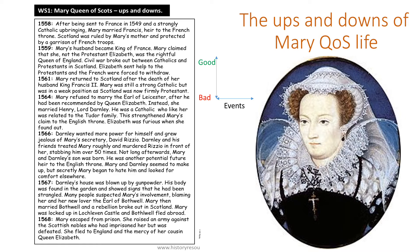Starting at 1558: Mary has been living in France with a very Catholic education. She is married to the heir to the French throne, and the Catholic connection between Scotland and France is very strong. In 1559, Mary's husband becomes King of France, enhancing her power. But back in Scotland there is a civil war between Catholics and Protestants, and the Protestants end up winning partly because Elizabeth backs them, weakening Mary's position at home.